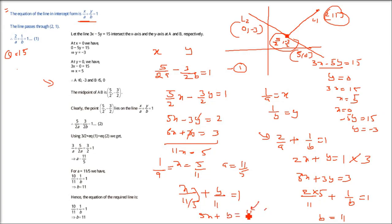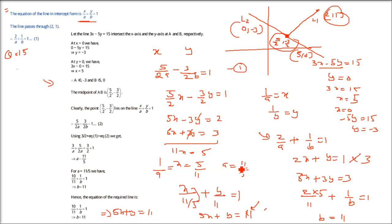So there are two methods to solve this. You can use the two points and find the equation of the line through them, or use the intercept form method just described. Either way, you get 5x + y = 11 as the final answer.